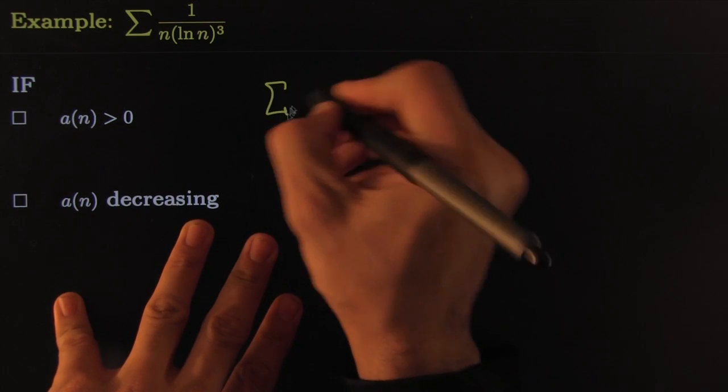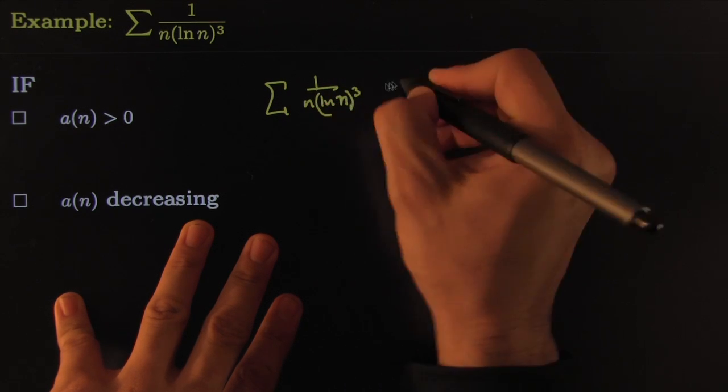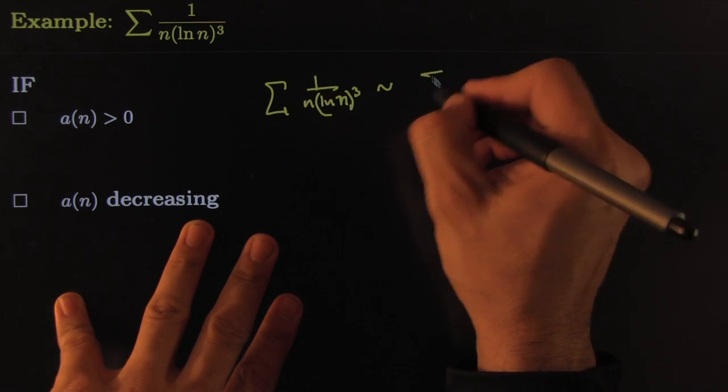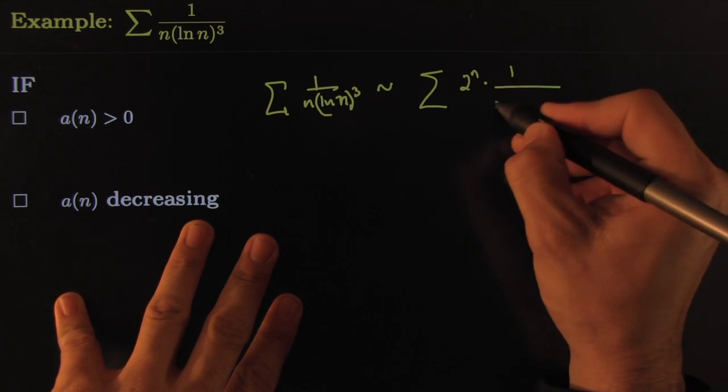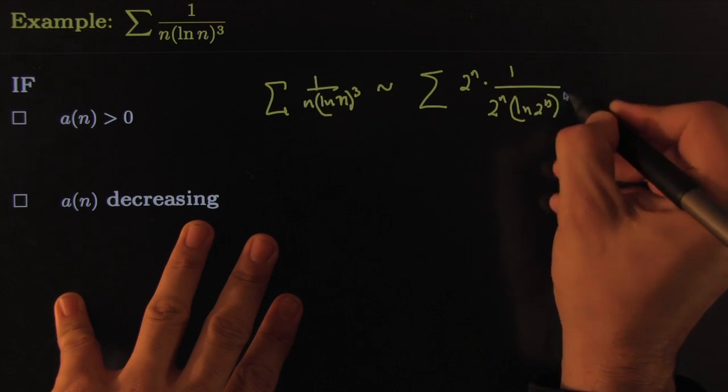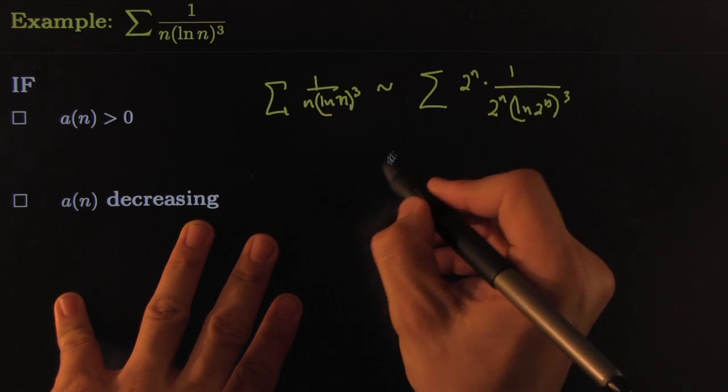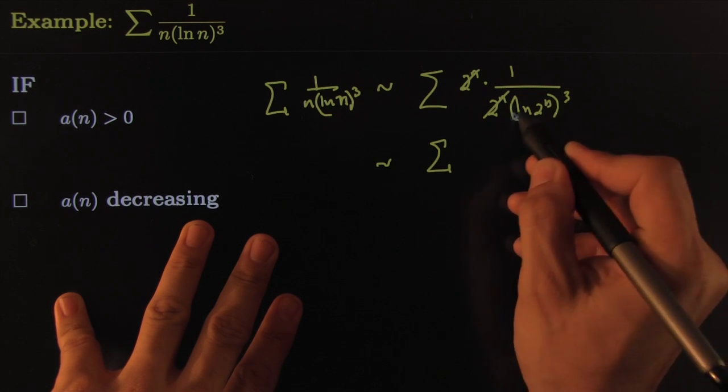So you can apply and say that this series 1 over n ln of n raised to the third behaves the same way that 2 to the n times 1 over 2 to the n times ln of 2 to the n raised to the third power behaves. So with these ones canceling, you get this can come down here.